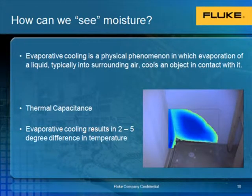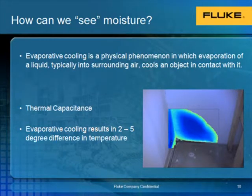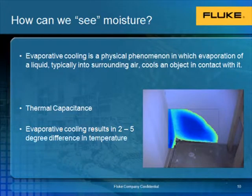You may be wondering how we're able to see moisture behind walls even though we're not able to see through the wall. We are able to do this because of what is known as evaporative cooling. When a liquid evaporates, typically into the surrounding air, it also cools an object it is in contact with. Thermal capacitance comes into play as well — this deals with a material or liquid's ability to retain its energy. Because moisture or water has a high thermal capacitance, it retains that energy much longer than other materials.